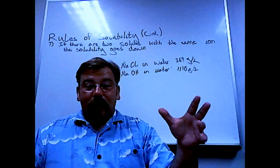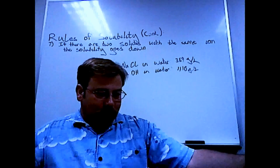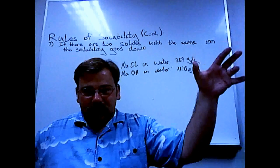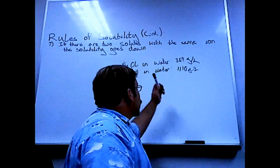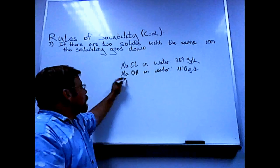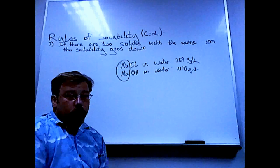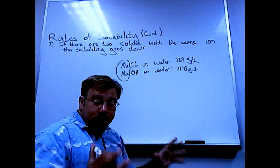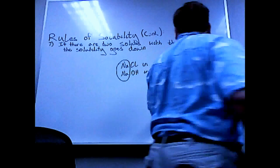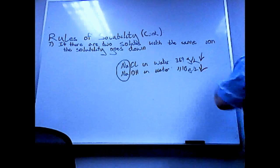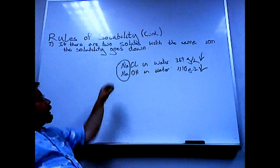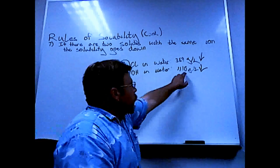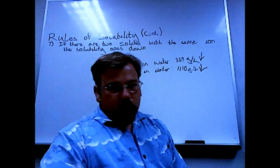Now if we grab a bigger bucket and take the two smaller ones, the one that has NaCl, the other one has NaOH, dump them in to the bigger bucket, both of these have the same ion sodium, which means since they're in the same bucket both of these values would go down. That's what number seven is trying to get at. Two solutes with the same ion, solubility goes down. That's the key thing there.